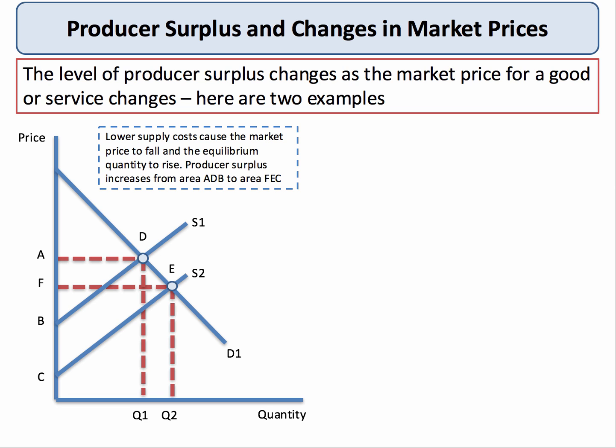At the original price A, producer surplus was the area above the supply curve and below the price, equalling area A, D, B. Following the fall in supply costs, the price comes down to F, so producers are now getting a lower price, but their supply costs have also fallen. The area above the new supply curve S2 and below the price is now shown by area F, E, C. Hopefully you can see there's been an increase in producer surplus because of a fall in the costs of supply. Keep in mind that consumers would also be better off — their consumer surplus would also go up.